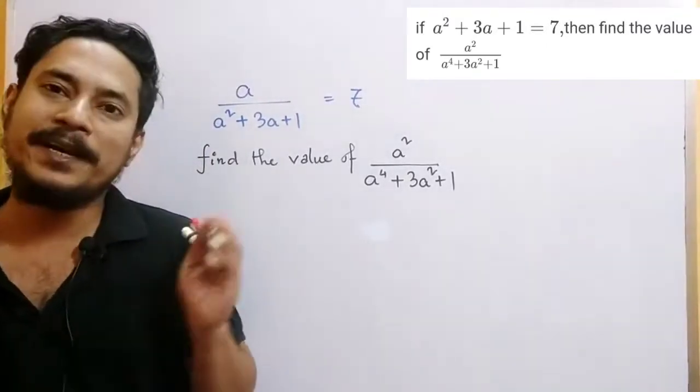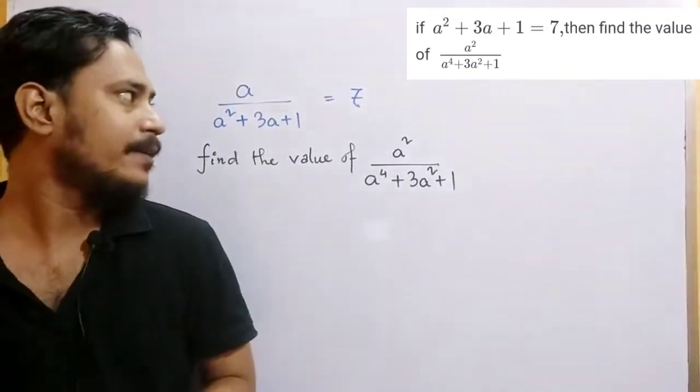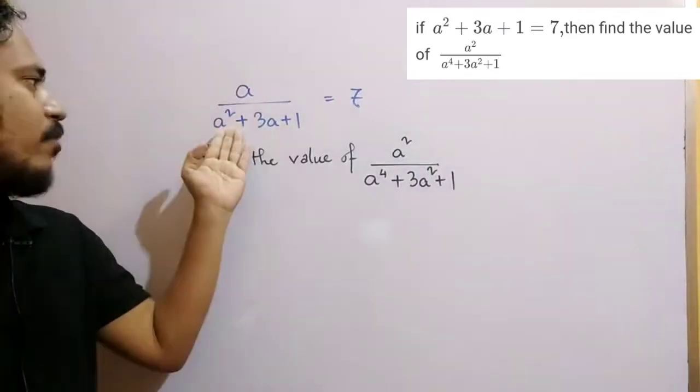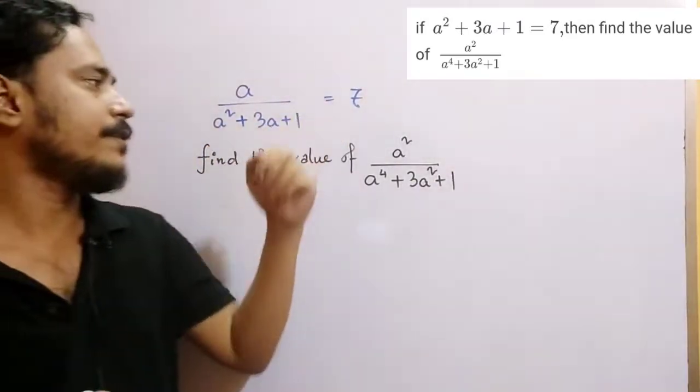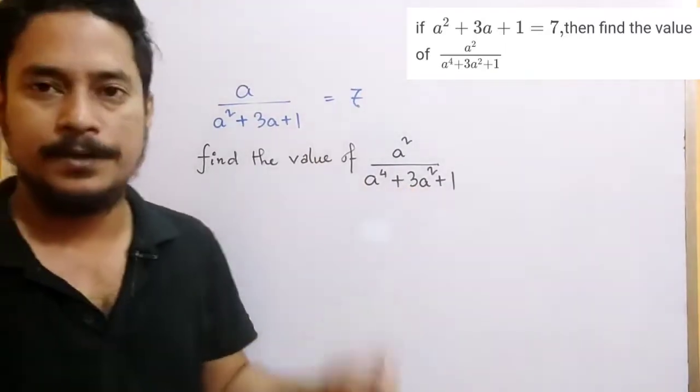Hello students, if we are given a problem: a by a squared plus 3a plus 1, which is given to us as 7, and we have to find the value of a squared by a squared plus 3a squared plus 1.